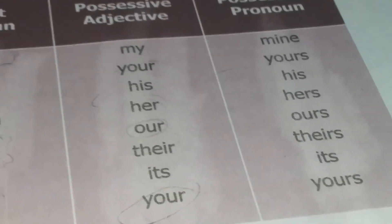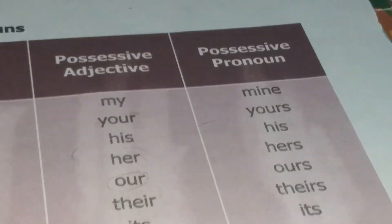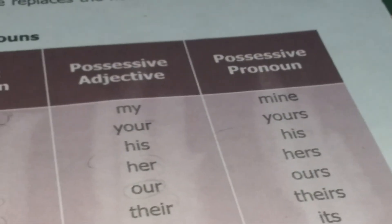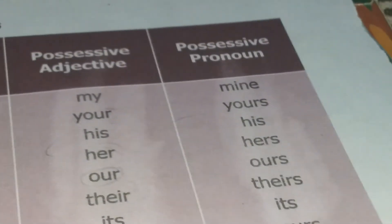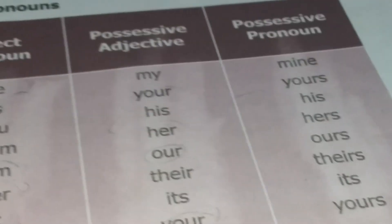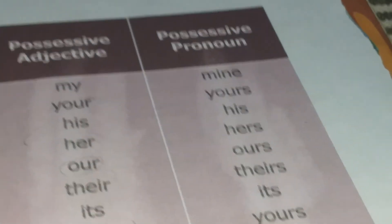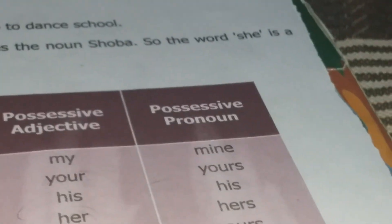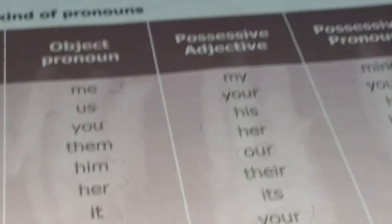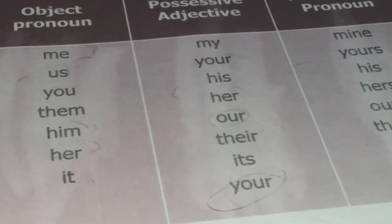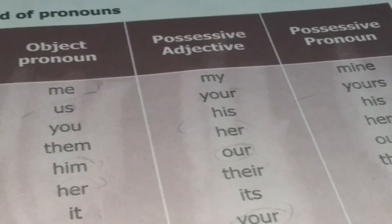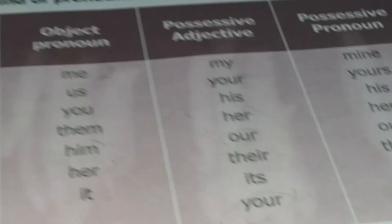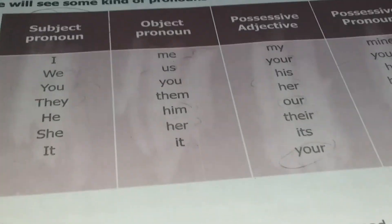While comparing possessive adjective and possessive pronoun: instead of my, mine; your becomes yours; his stays his; her becomes hers; our becomes ours; their becomes theirs; its stays its. The major difference is possessive pronouns are in plural form, and my, your, his, her, our, their, its are in singular form.